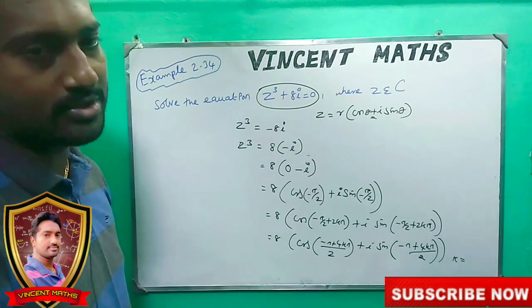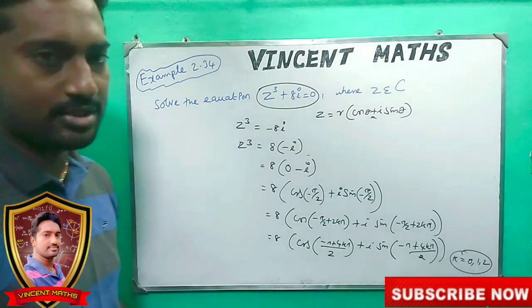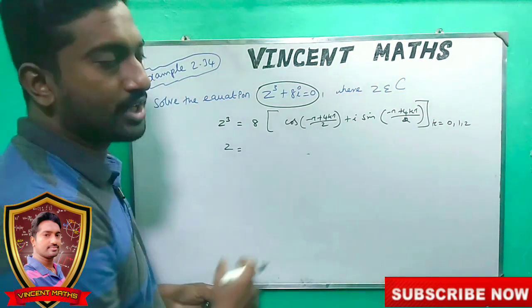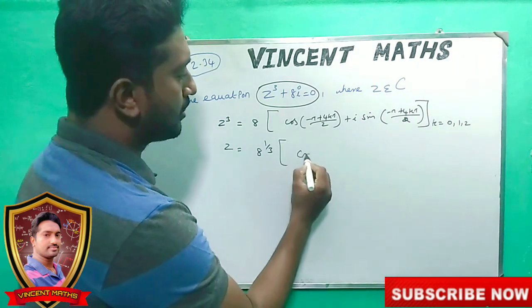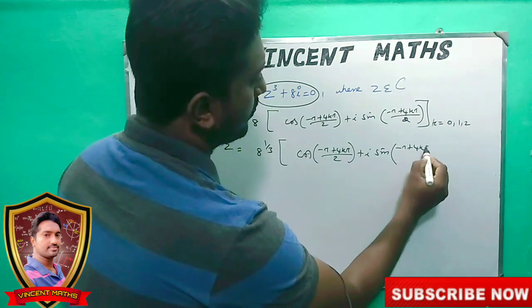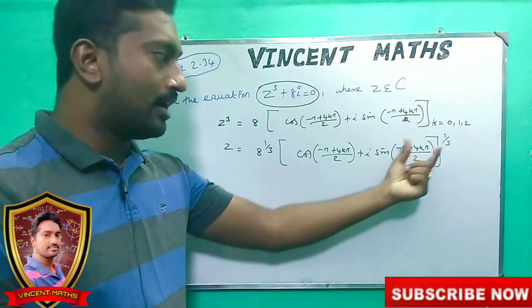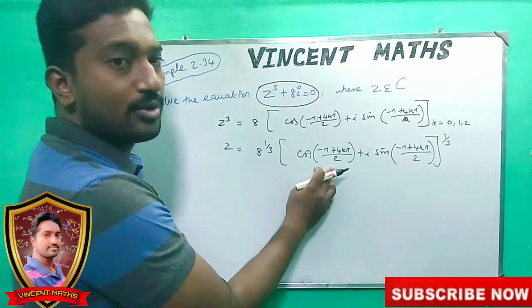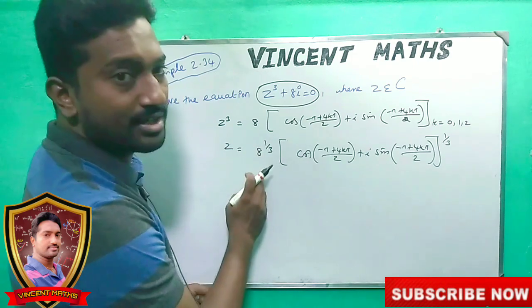We have a cube root, so we substitute k = 0, 1, 2. Since z³ = expression, z equals the whole thing to the power of 1/3. So 8^(1/3) = 2. We apply De Moivre's theorem.